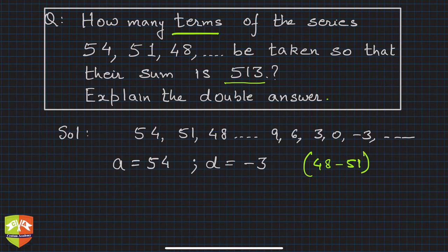d is nothing but 48 minus 51, the later term minus the preceding term, which gives -3. d is negative, so keep that in mind.